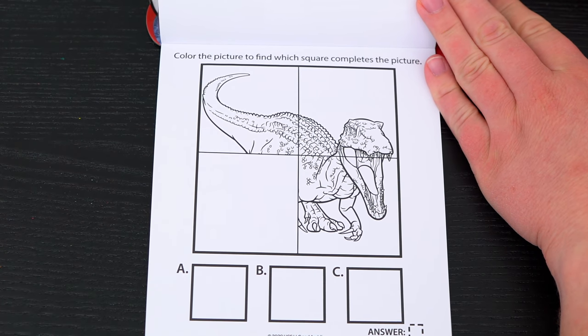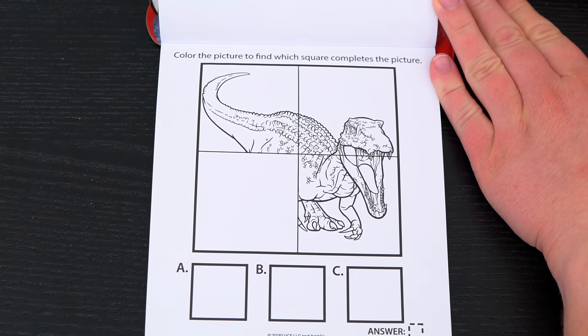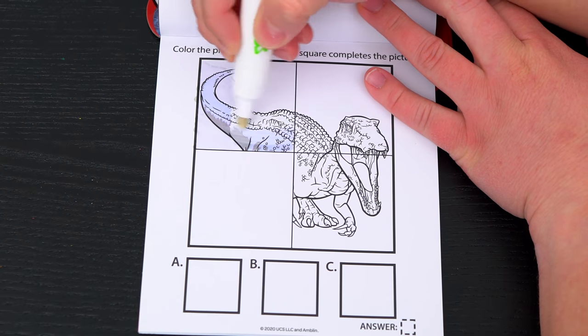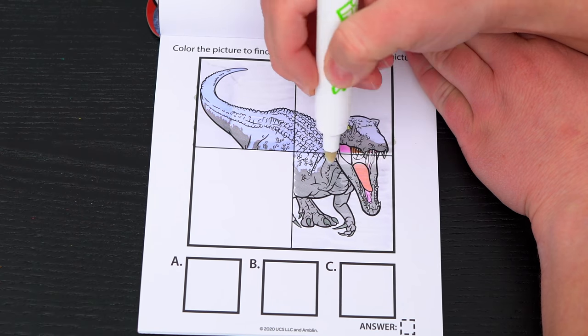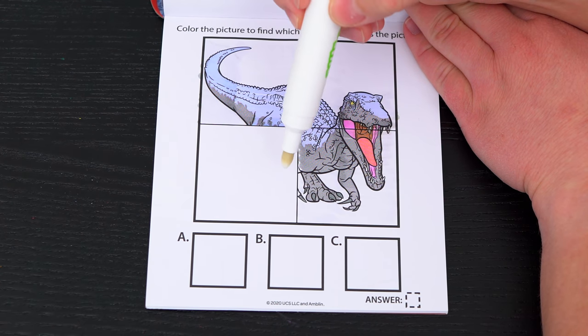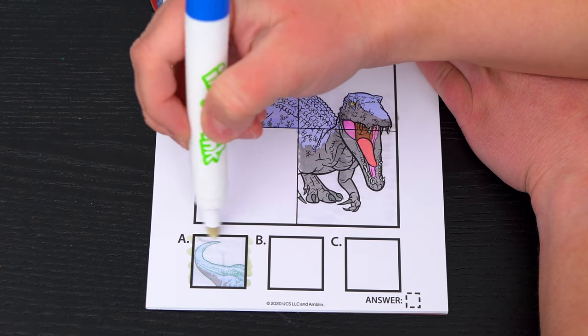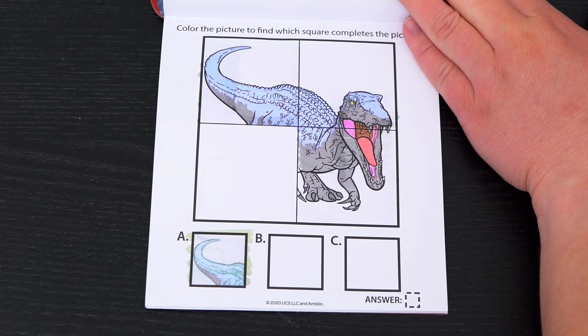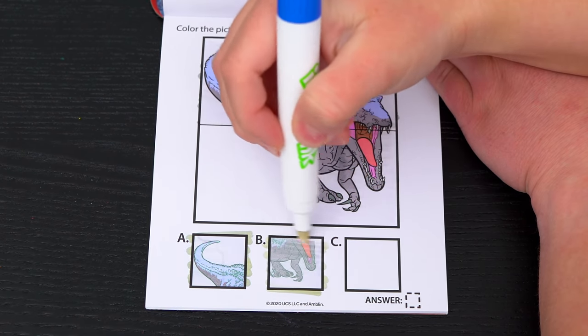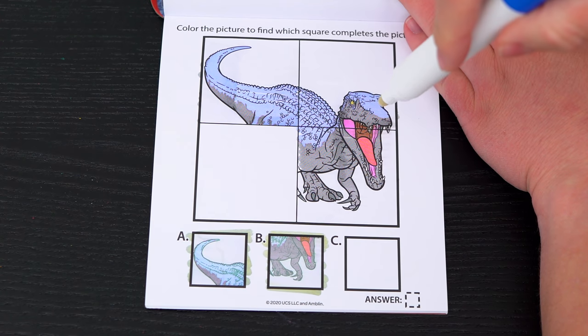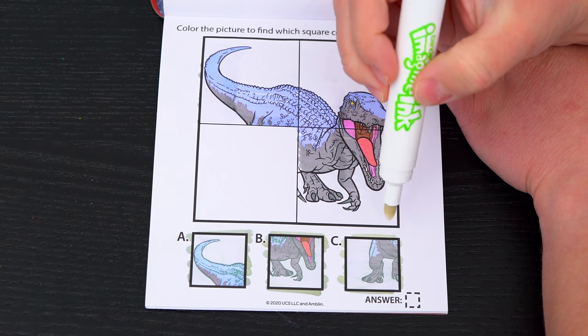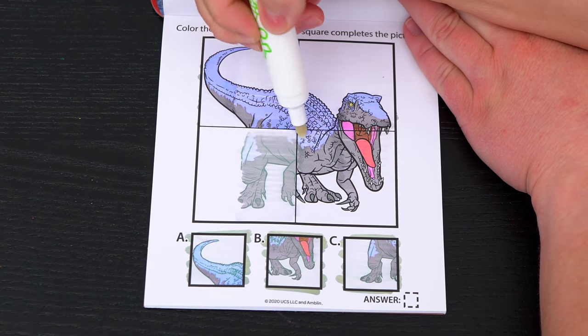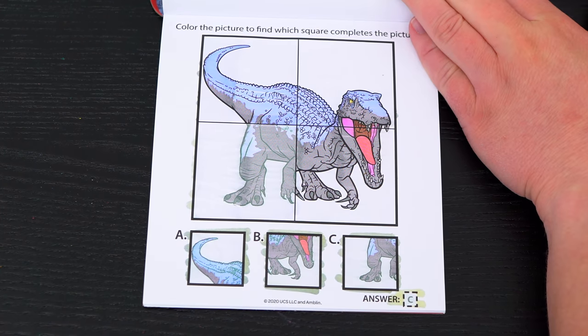Color the picture to find which square completes the picture! Okay, so it looks like we're gonna be looking for a piece with the dinosaur's feet! Hmm, that piece won't fit! That looks like a tail! Nope, that one has more mouth! We already have a mouthpiece! Oh, look! That must be the missing piece! Yay! It was!